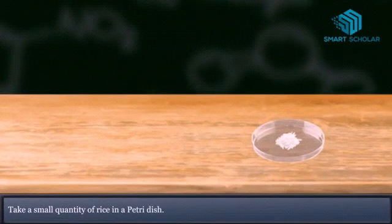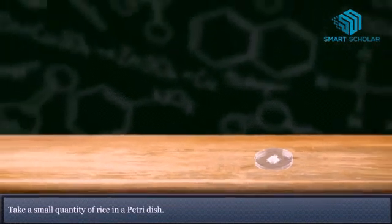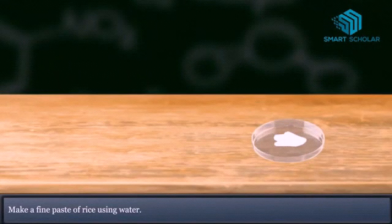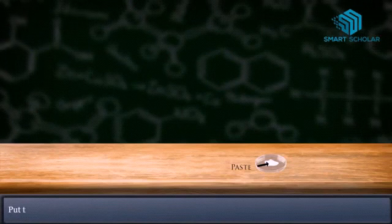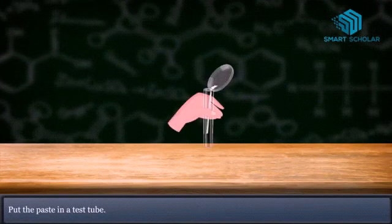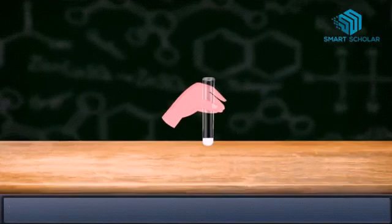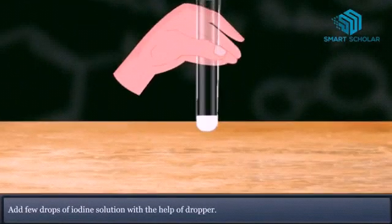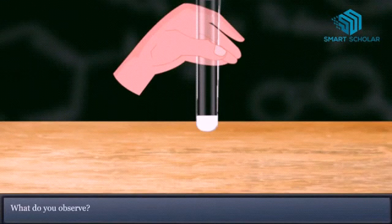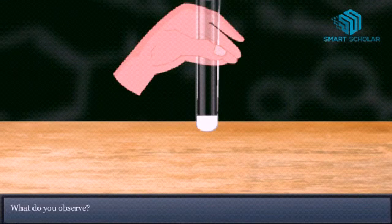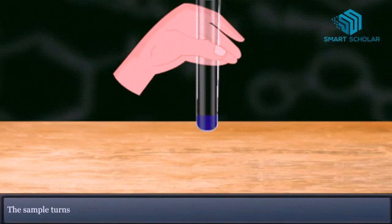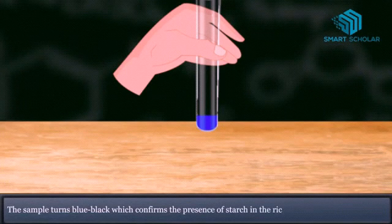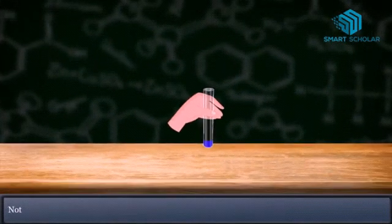Take a small quantity of rice in a petri dish, add some water and make it into a paste. Transfer this paste into a test tube. Very carefully add a few drops of iodine solution with the help of a dropper. Let us wait for the change. What do we observe? The sample turns blue-black in color, which confirms the presence of starch in the rice.